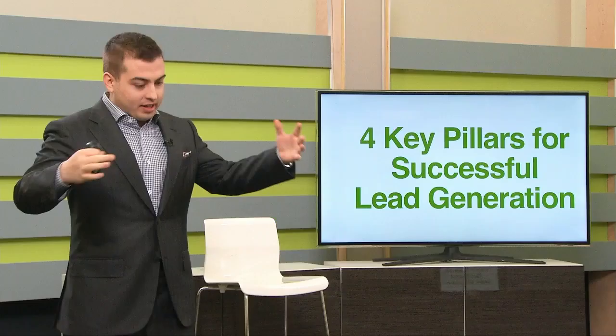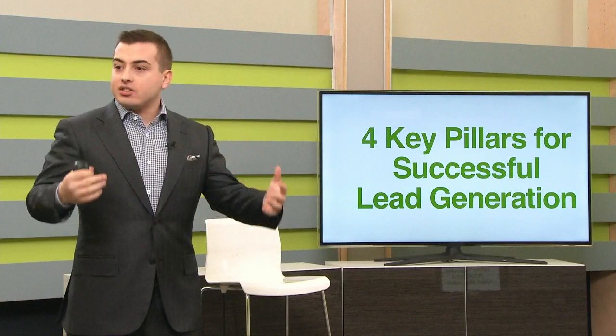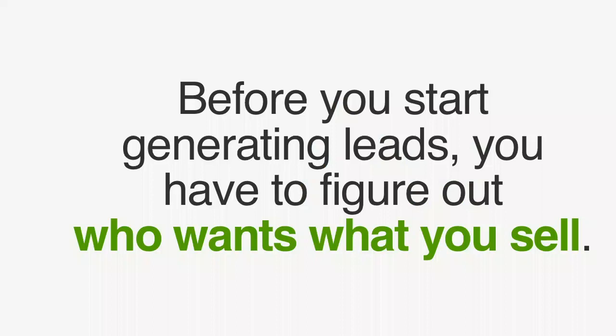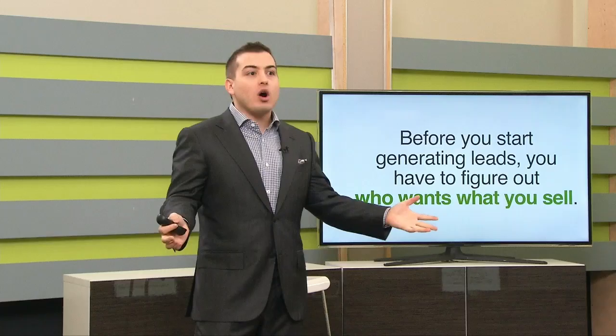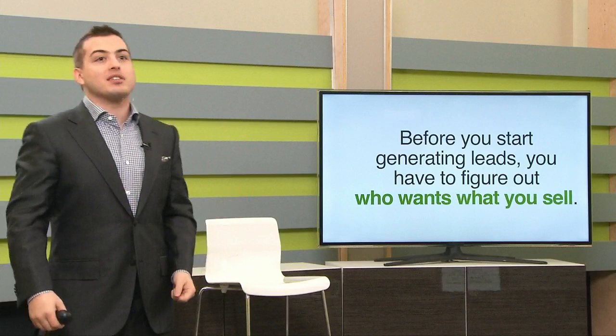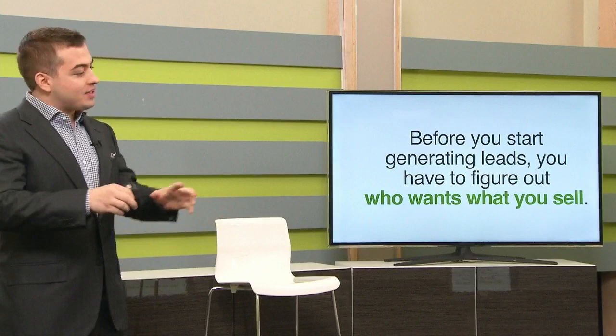I want to introduce you to the four key pillars of successful lead generation online. These pillars are going to appear throughout the presentations today and you'll see how to leverage each of them. The first thing is: before you start generating leads, you have to figure out who wants what you sell. A lot of people start building their businesses thinking their target audience is too broad — like selling an iPad case and saying the audience is everyone with an iPad. That's too broad, and trying not to lose out on a wide audience is a big mistake. Before you start generating leads, you have to know who you want to come to your site.